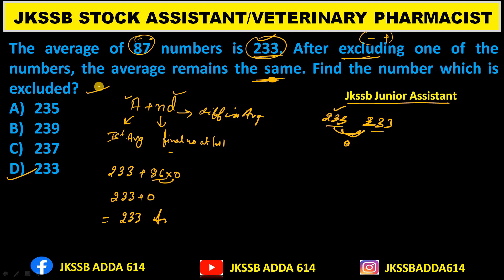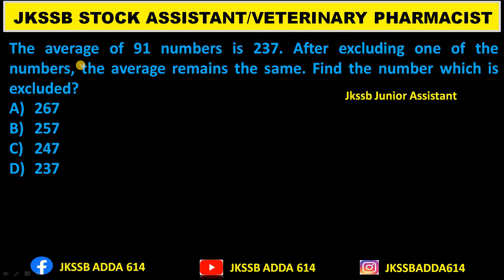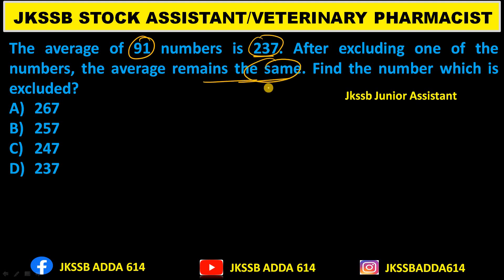The next question is very similar — just the values have changed. The average of 91 numbers is 237. After excluding one of the numbers, the average remains the same. Since both averages are 237, the difference is 0, so the answer will be 237 — option number D.